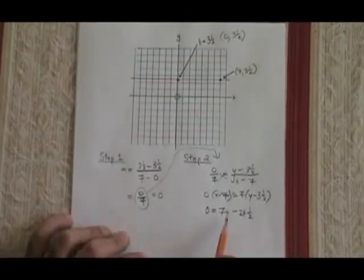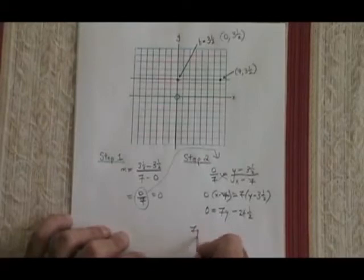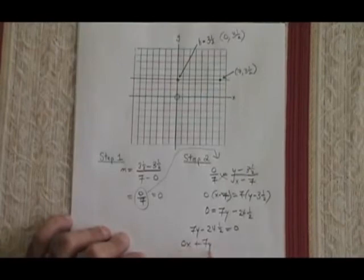I like ax plus by plus c equals 0 for the form of the equation, so I'm just going to write this in reverse: 7y minus 24.5 equals 0. And if I want to show my x term, I can write it as 0x plus 7y minus 24.5 equals 0.